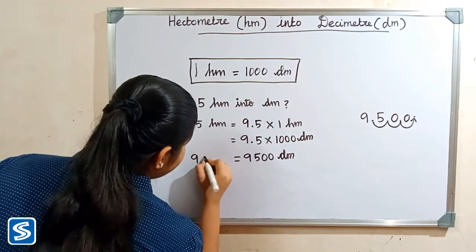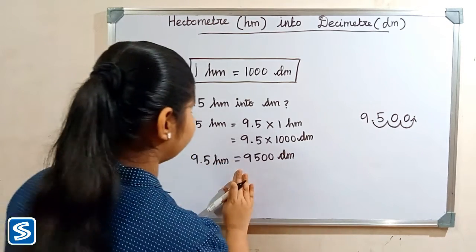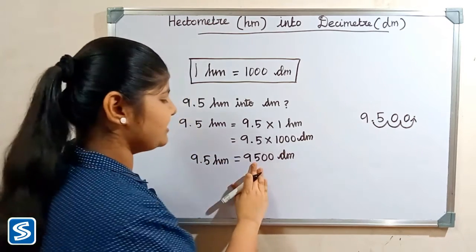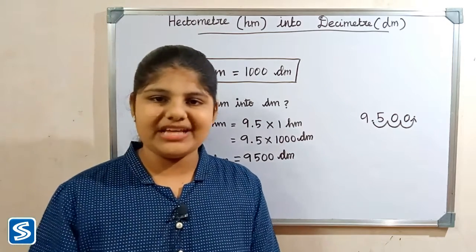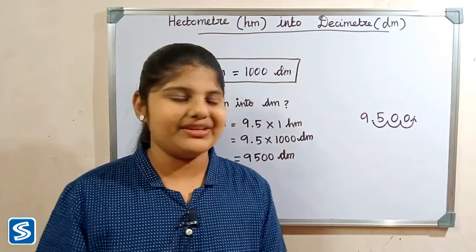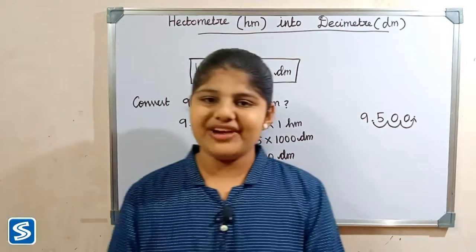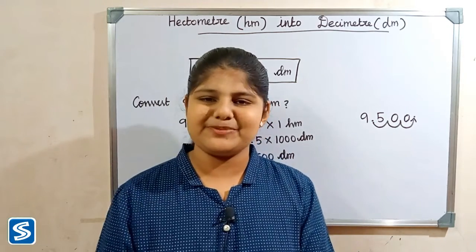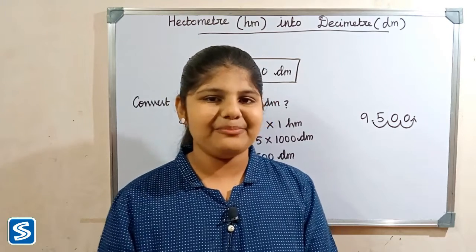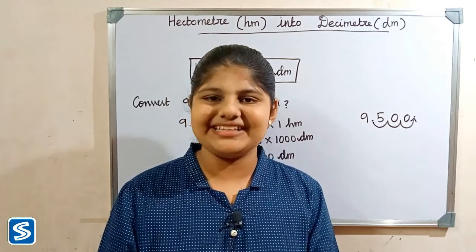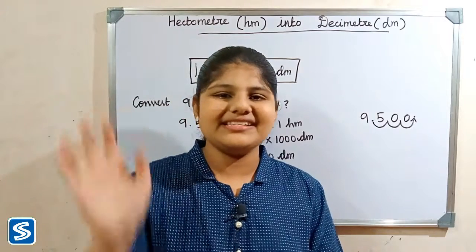So 9.5 hectometer is equal to 9,500 decimeter. Hope you friends all understood how to convert hectometer into decimeter. If you did not subscribe to my channel, kindly subscribe to Swamish channel and press the bell button so you can receive all my updated videos regularly. Bye friends, thank you.